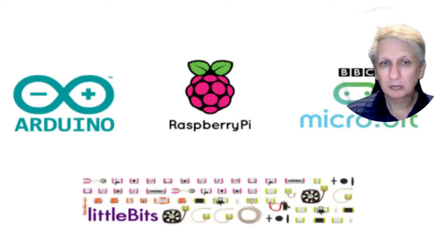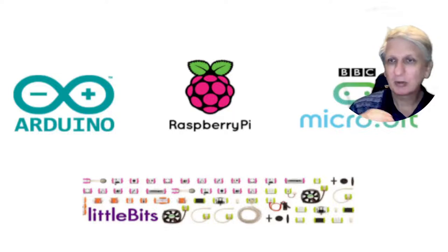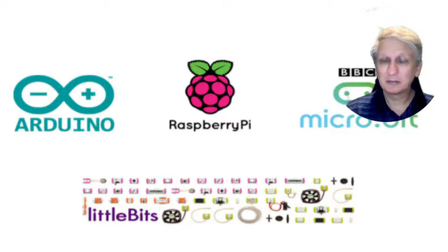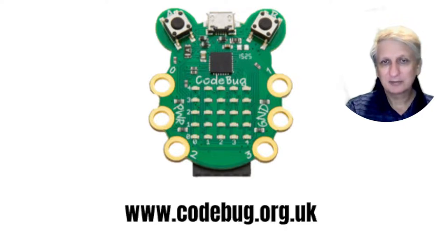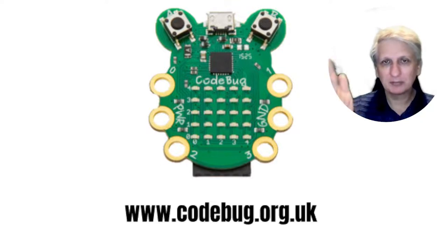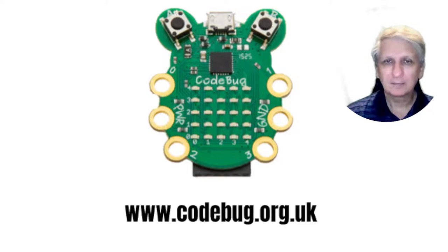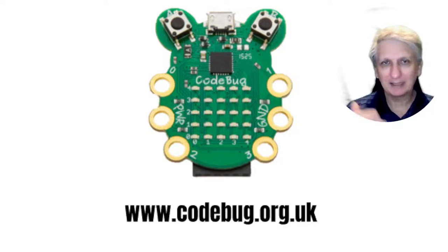Arduino and Raspberry Pi are other microcontrollers. LittleBits is a set of electronic components that can be put together to make microcontrollers, and so students can explore a bit more of the electronics involved. The Code Bug is similar to the micro:bit — it has an array of LEDs, six connection points around the outside where you can connect wires like with the fruit in the Makey Makey, a couple of buttons at the top, and a USB connection to the computer.